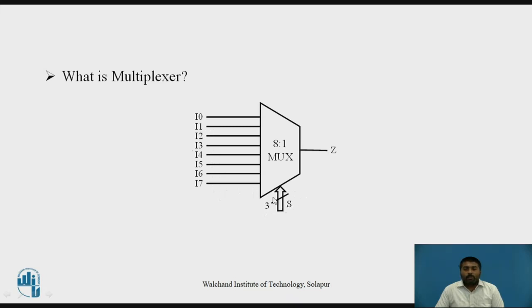So 2 raised to 3 equals 8. To satisfy 8 inputs, 3 select lines are required. This is how you can find how many select lines are needed for a particular multiplexer.